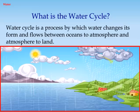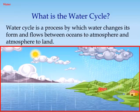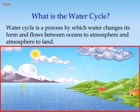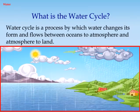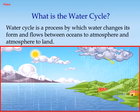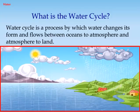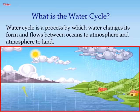What is the water cycle? The water cycle is a process by which water changes its form and flows between oceans to atmosphere and atmosphere to land.